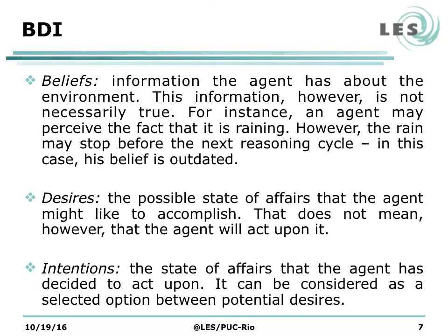Beliefs are information the agent has about the environment. This information, however, is not necessarily true. For instance, an agent may perceive the fact that it is raining; however, the rain may stop before the next reasoning cycle of the agent, making his belief that it is raining outdated. Desires are the possible state of affairs that the agent might like to accomplish, though the agent will not necessarily act upon them. Intentions are the state of affairs that the agent has decided to act upon — they can be considered a selected option between potential desires.